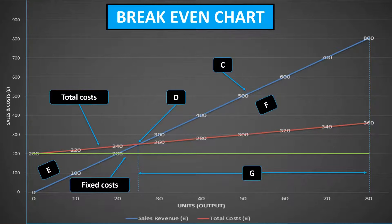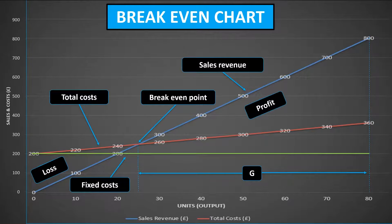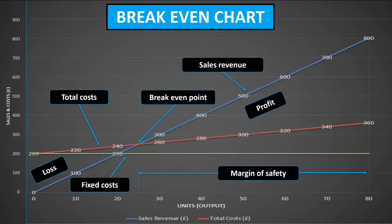Label C identifies the sales revenue, starting at £0 when nothing is sold and then increasing by £10 consistently. Label D is the breakeven point, always shown as a cross where sales and total costs cross paths. Label E is the area of loss — anything under the breakeven point. Label F is the area of profit — anything above the breakeven point. Label G is the margin of safety, which as we calculated is anything above 25 units all the way up to 80 units — hence 55 units, perfectly represented on the chart.